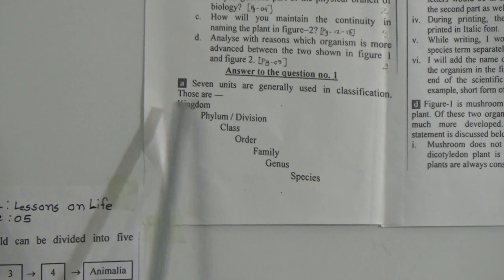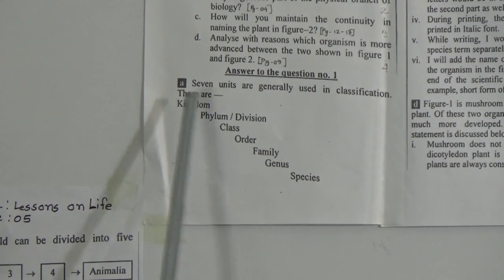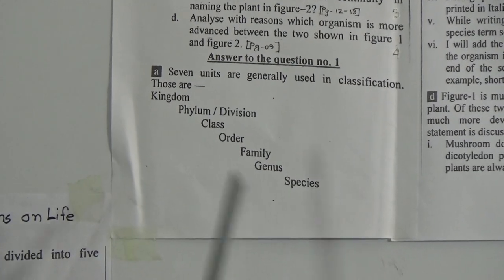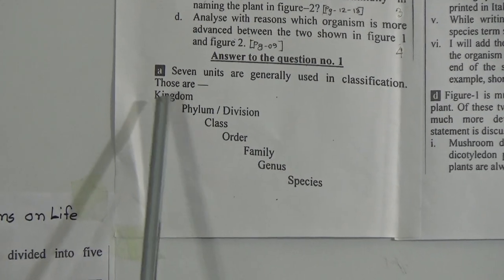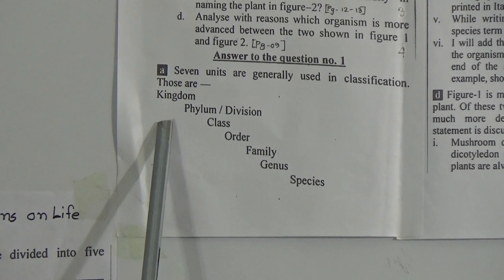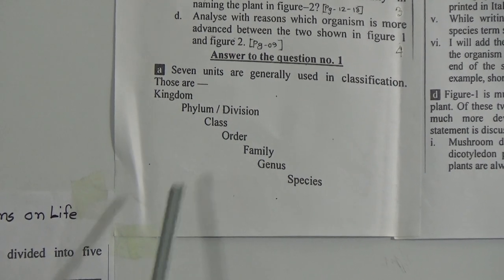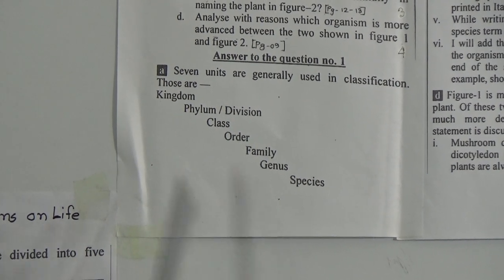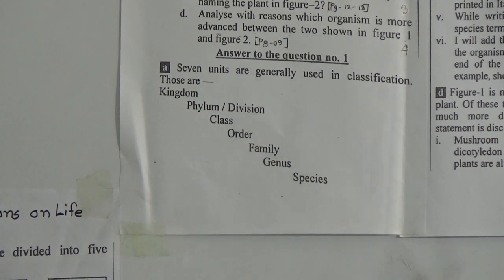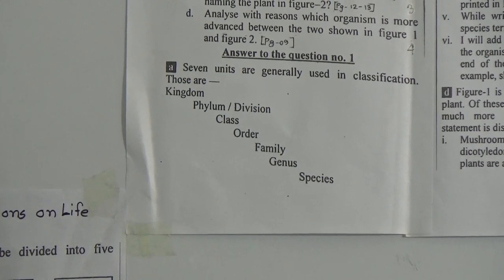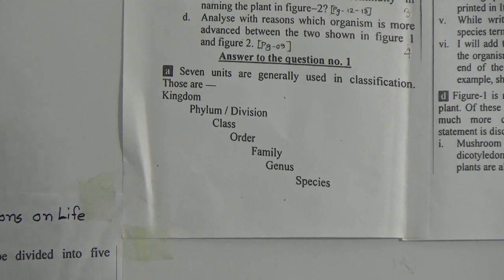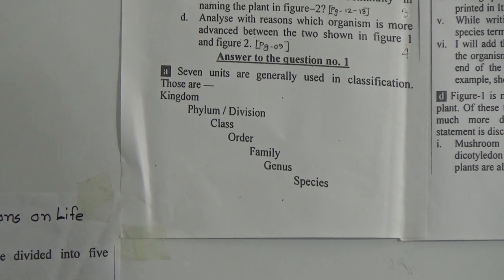According to your book, you must write them in the correct order: kingdom, phylum, class, order, family, genus, species. You do not write kingdom, then skip to phylum, then class out of order. This is the correct and scientific way to write the units of classification.